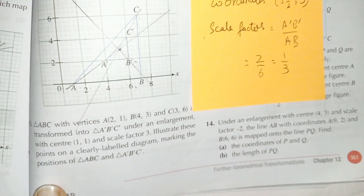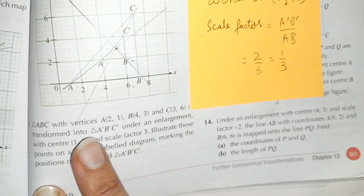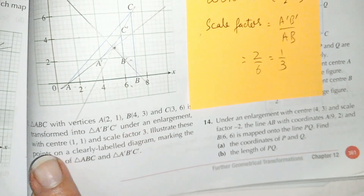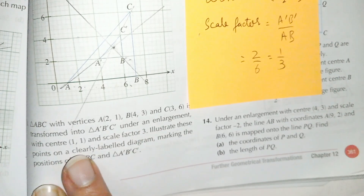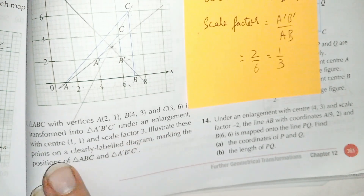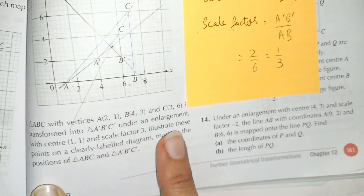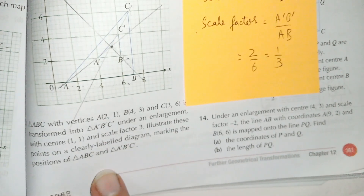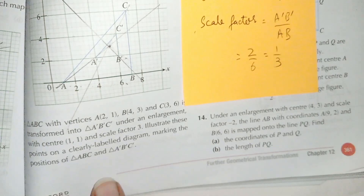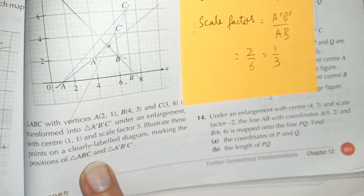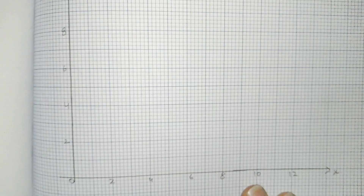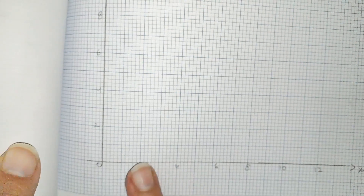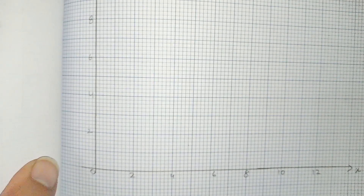Now question number 10: the triangle with vertices A, B, and C is transformed into triangle A prime, B prime, and C prime under enlargement. The center of enlargement and scale factor are given. We have to illustrate the points on a clearly labeled diagram. First we draw triangle ABC on graph paper, where one small box equals one unit.